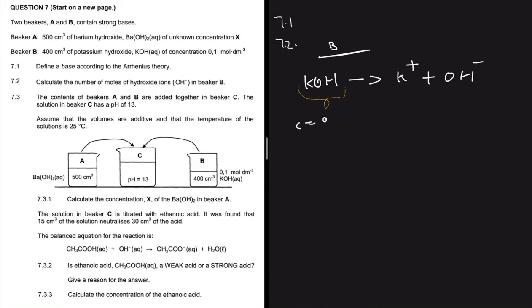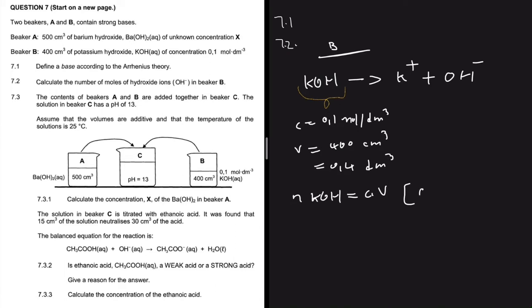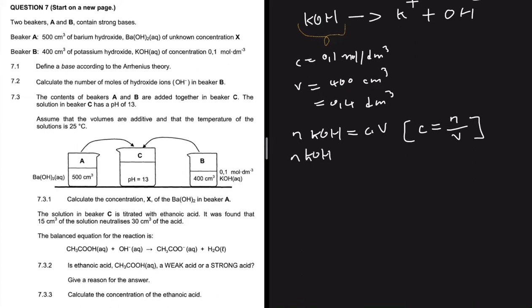The concentration is 0.1 mol per dm³ and the volume is 400 cm³, which we convert to dm³ by dividing by 1000, giving 0.4 dm³. The number of moles of KOH equals C multiplied by V, because concentration equals moles divided by volume. So N(KOH) = 0.1 × 0.4 = 0.04 mol.